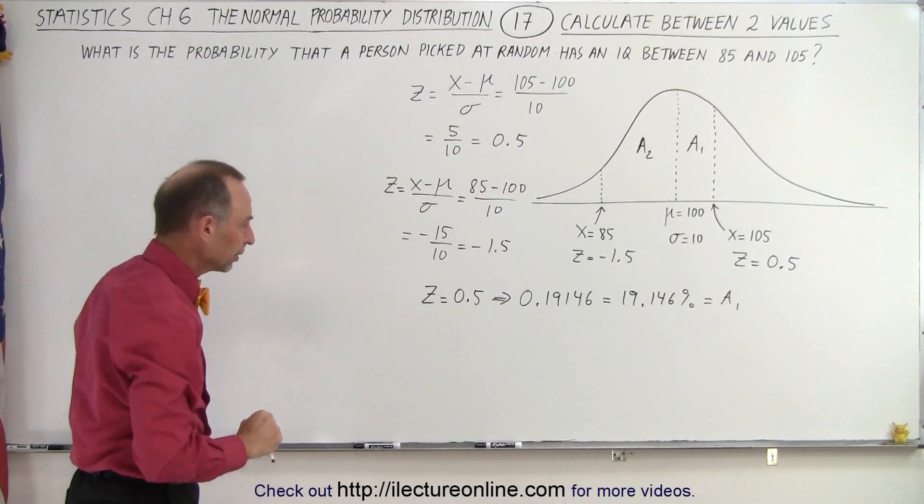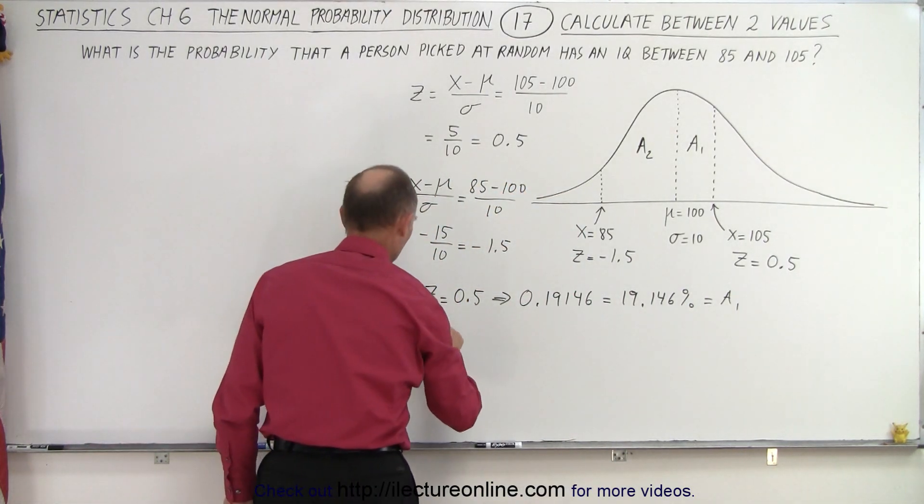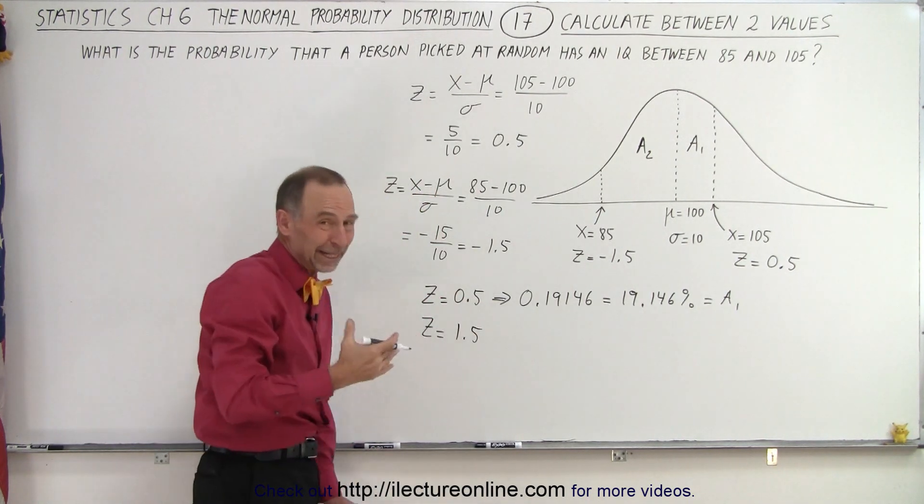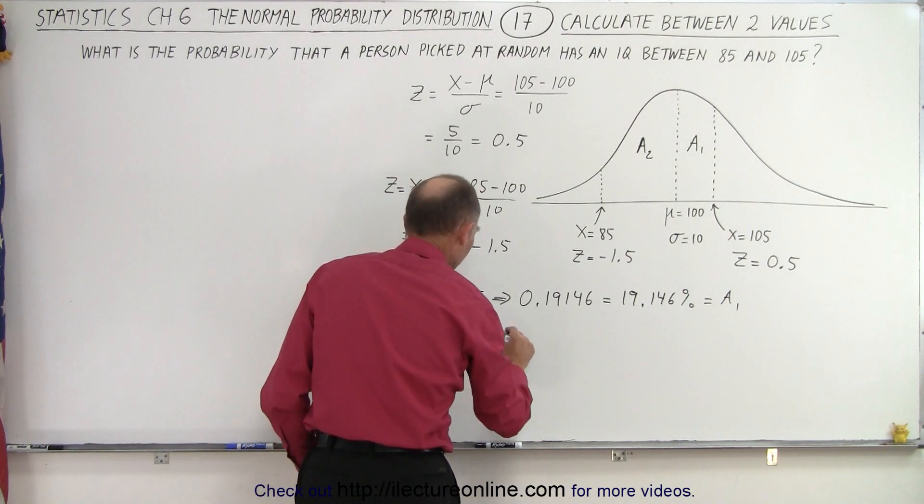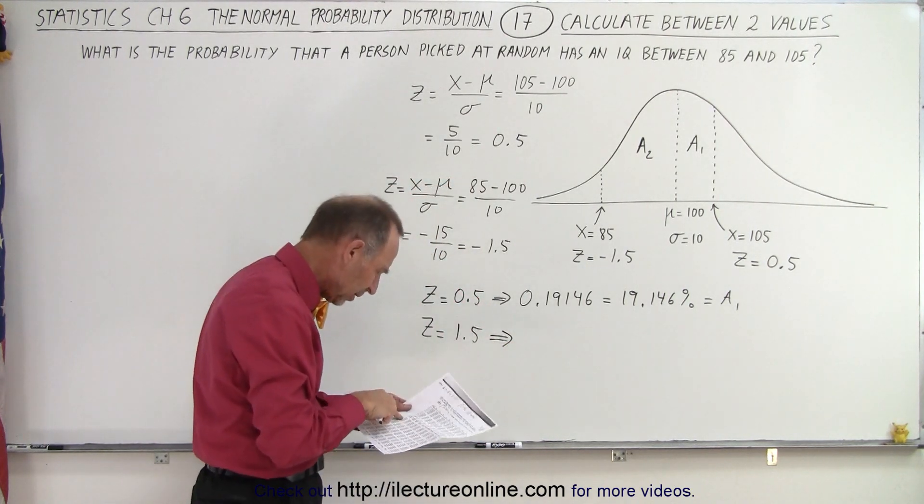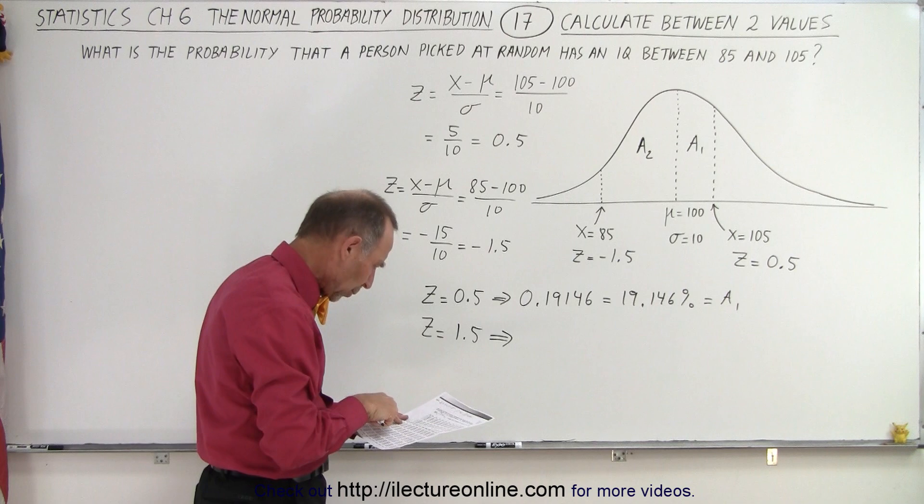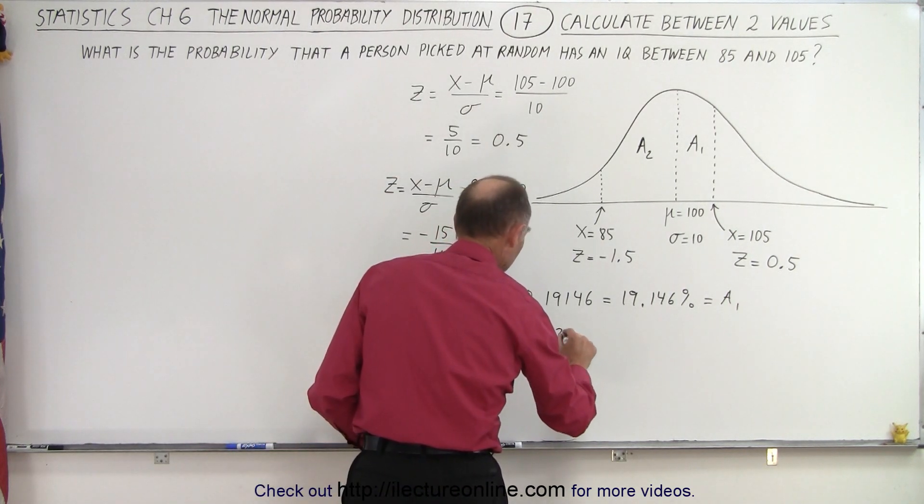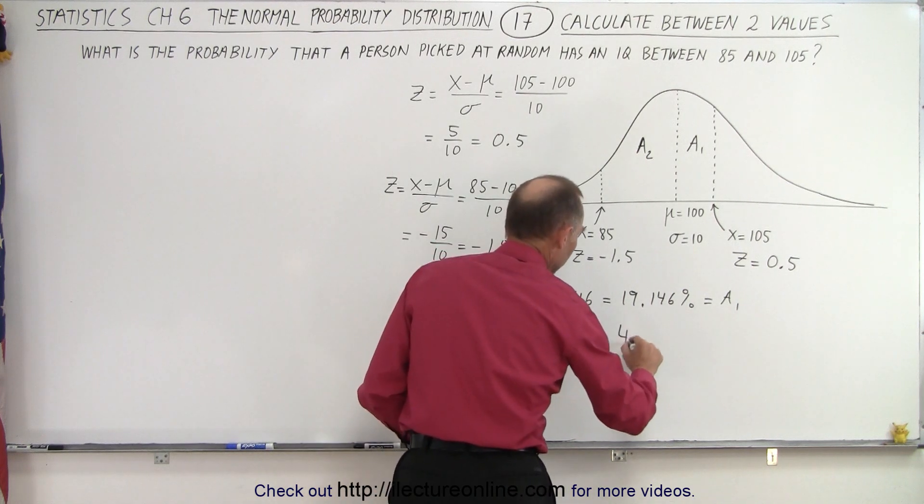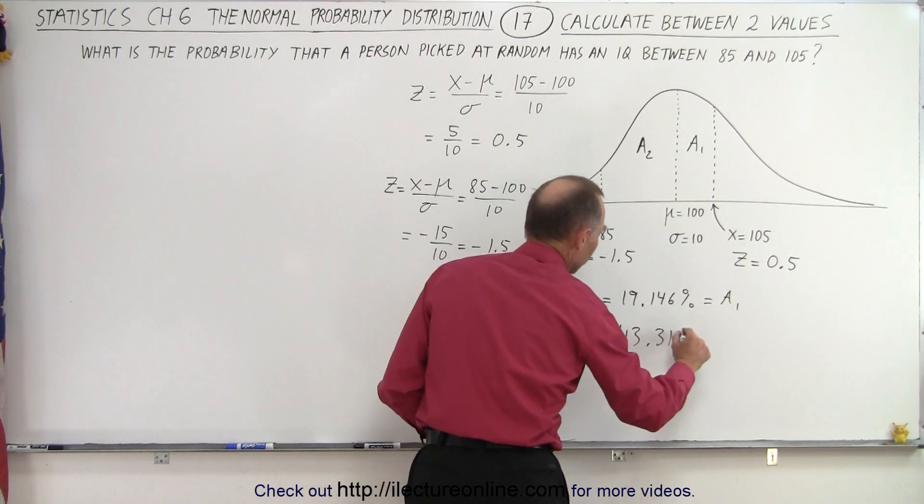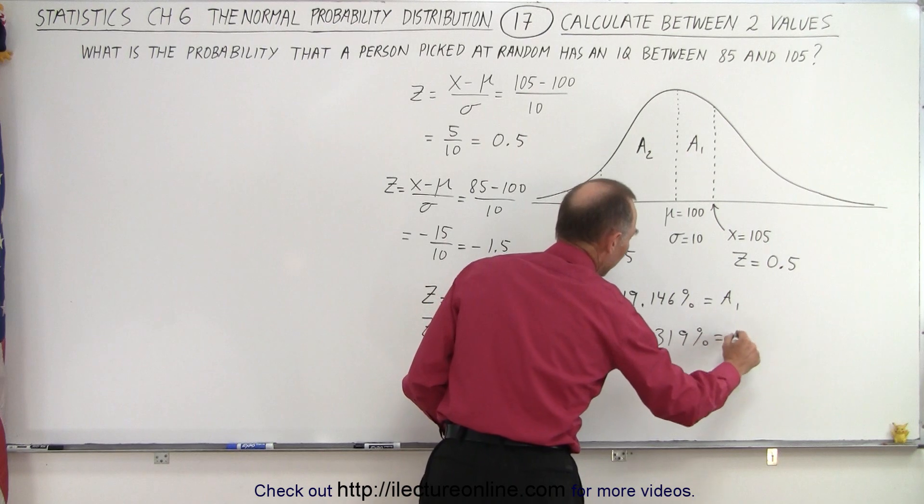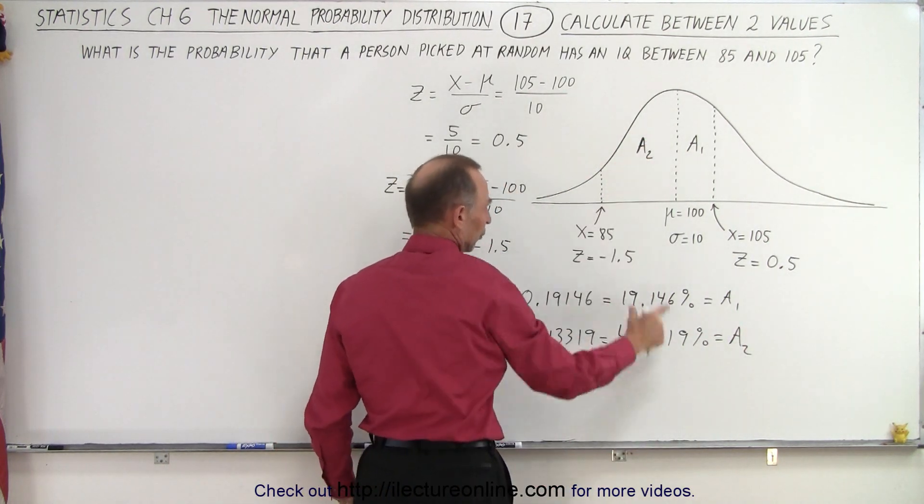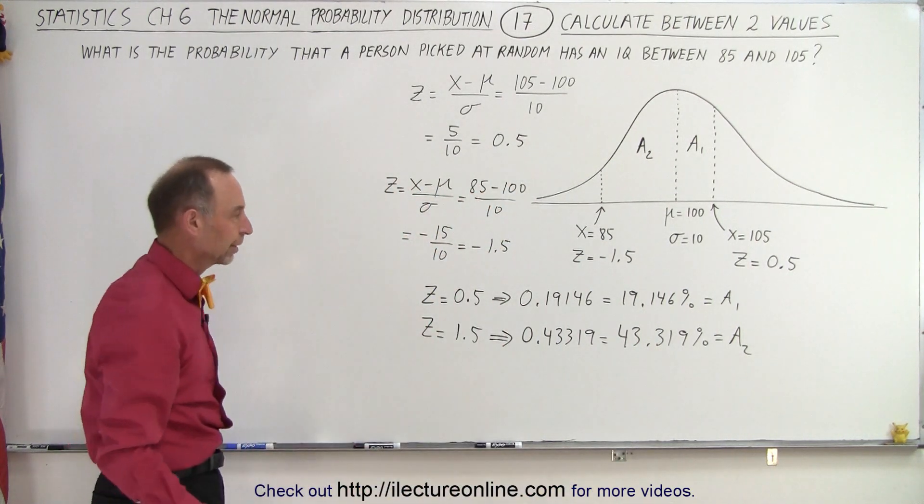For z equals 1.5, and notice it doesn't matter if you pick a negative or positive, you get the same result. That corresponds to a value of 0.43319, which is 43.319%. And that represents area 2. So that represents this area underneath the curve, which is a little bit over 43% of the total area.